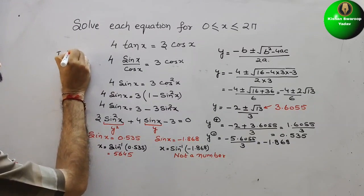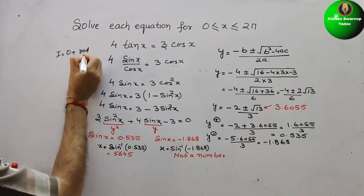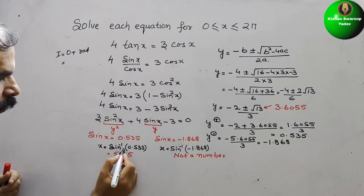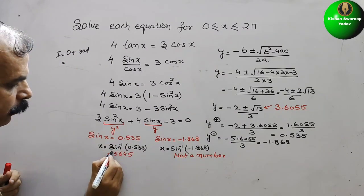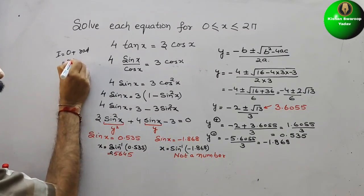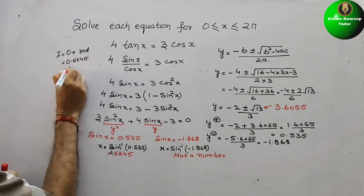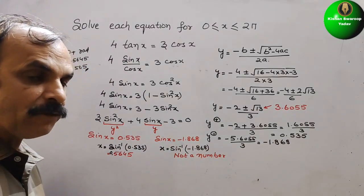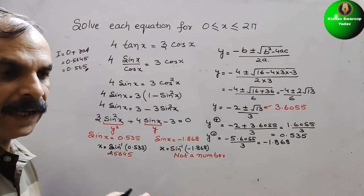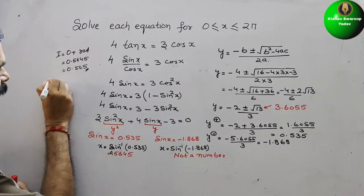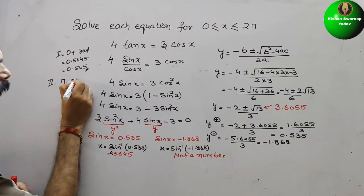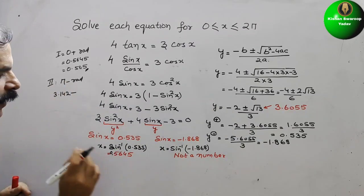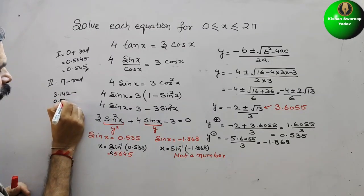In the first quadrant, we write x = the radian value, so x = 0.5645, which we can write as approximately 0.565. This is your first solution. In the second quadrant, x = π − radian = 3.142 − 0.565.